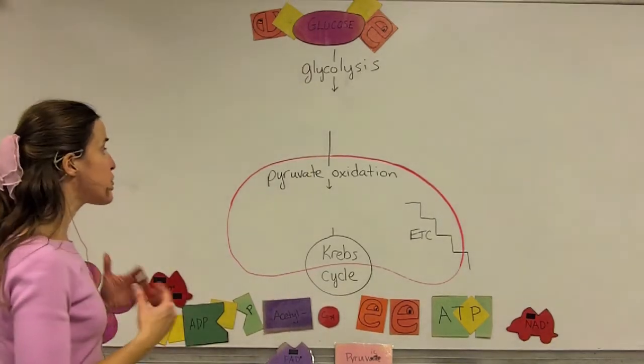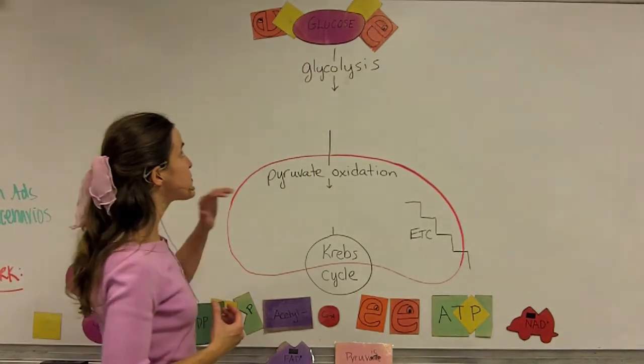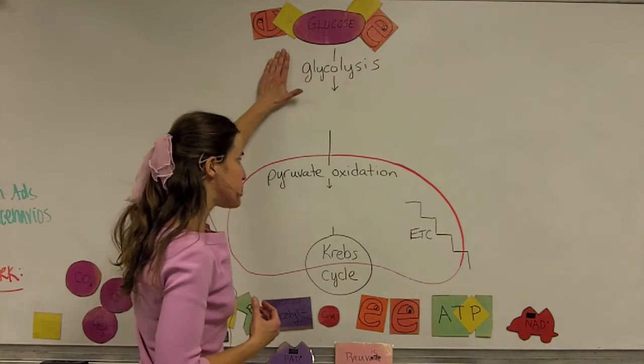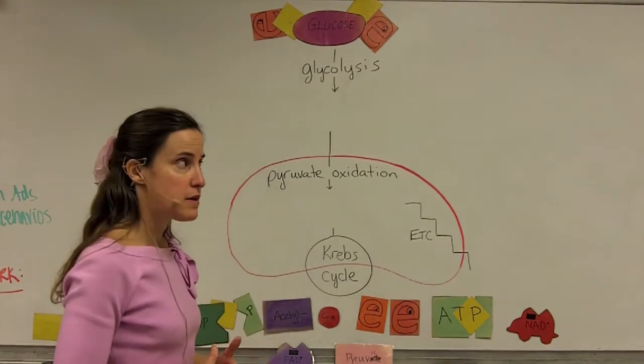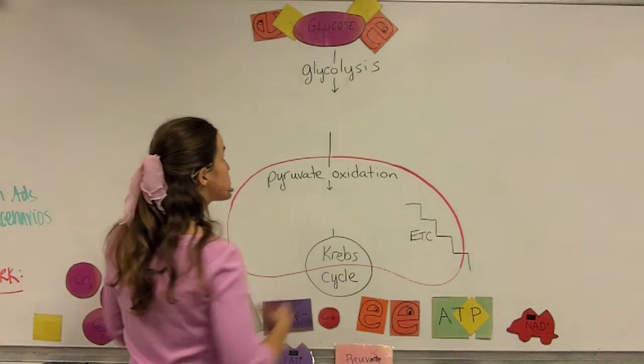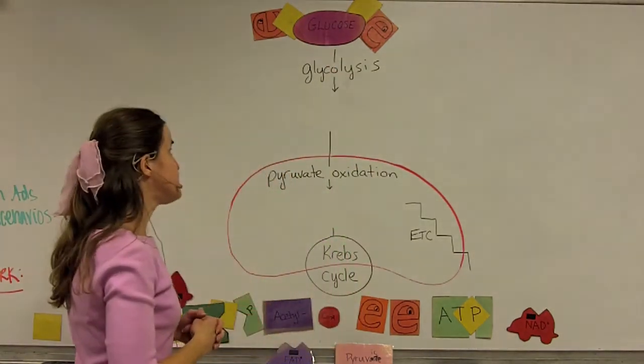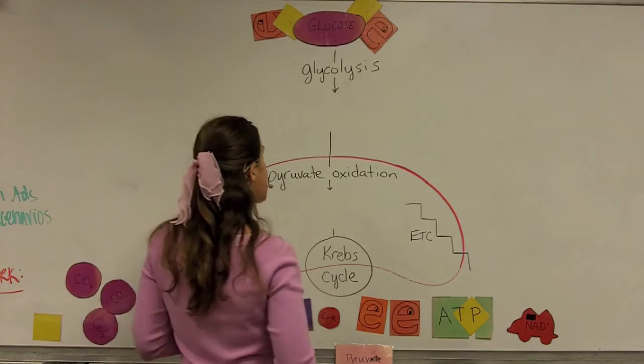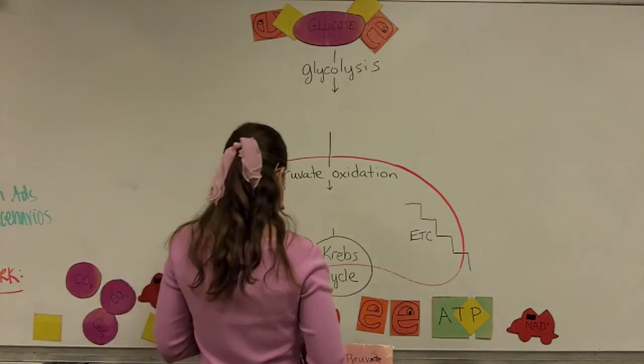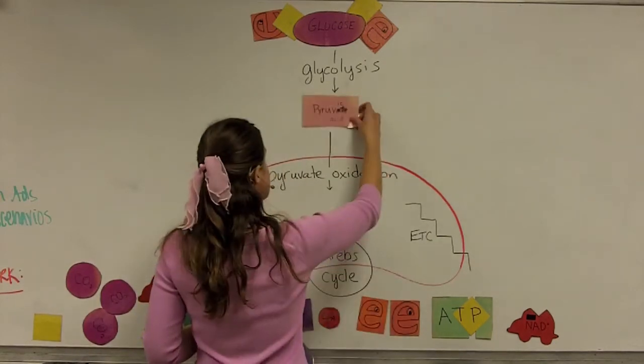Cellular respiration is the long series of reactions that allow cells to get energy from glucose in order to produce ATP. The process starts with glycolysis. In glycolysis, which occurs in the cytoplasm, glucose is broken down in a series of reactions into the molecule pyruvic acid.